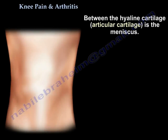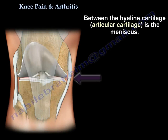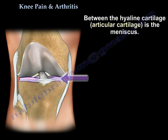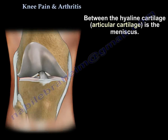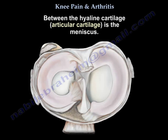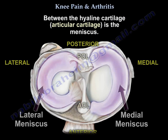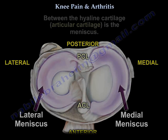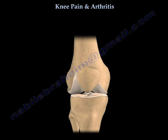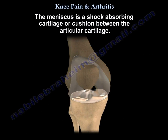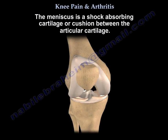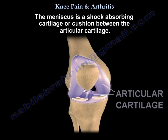Between the hyaline cartilage, which is called the articular cartilage, you can see the meniscus — the lateral meniscus and the medial meniscus. The meniscus is a shock-absorbing cartilage. It acts as a cushion between the articular cartilage.